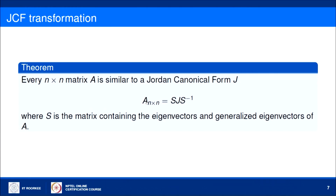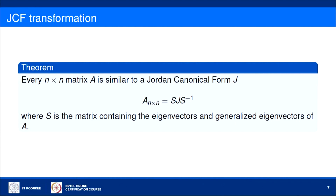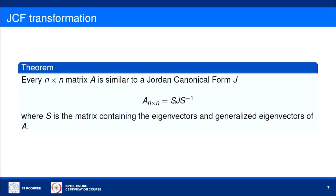When A is not diagonalizable and has only M linearly independent eigenvectors, we can write only M columns of S. The remaining N−M columns come from the generalized eigenvectors of matrix A. So to write matrix S, we need to learn how to find the generalized eigenvectors of a matrix.